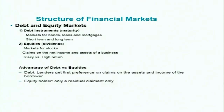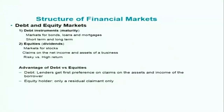Let us look at the advantages of debt and equity. In the case of debt, when you lend your money to a corporation or government, as a lender you get the first preference on claims on the assets and income of the borrower. Only after that does the equity holder get a claim. So the equity holder is only a residual claimant — when you buy stock, you have the first preference on claims only after the lender is satisfied.